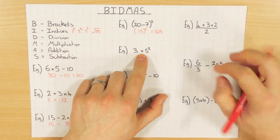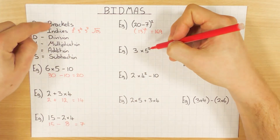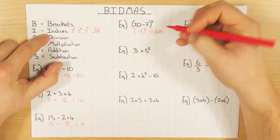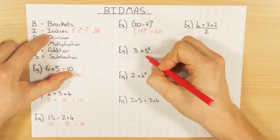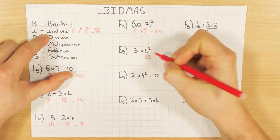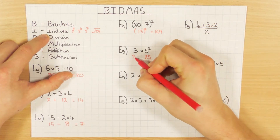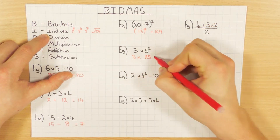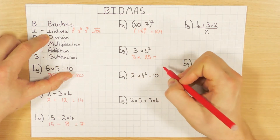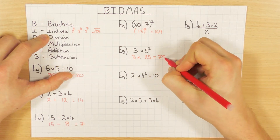Next one I've got a multiplication and some indices, so indices comes before multiplication. I do 5 squared — meaning 5 times 5 — which is 25, bring the rest of it down, and finish off with multiplication: 3 times 25 is 75.